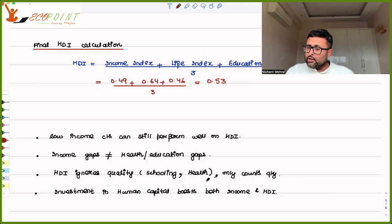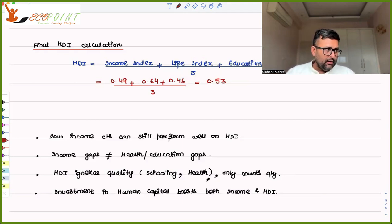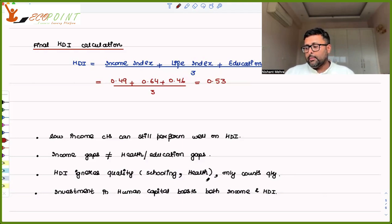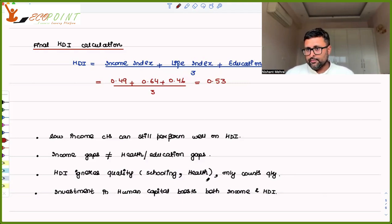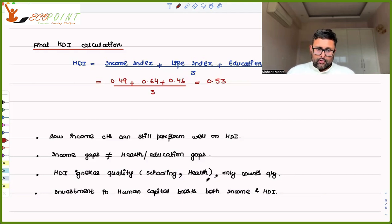HDI is not taking into account quality differences. Just because people have completed many years of education — say 18 years — it doesn't mean they received quality education. HDI only accounts for quantity, not quality. You should read the book alongside these notes. I hope this was useful — thank you.